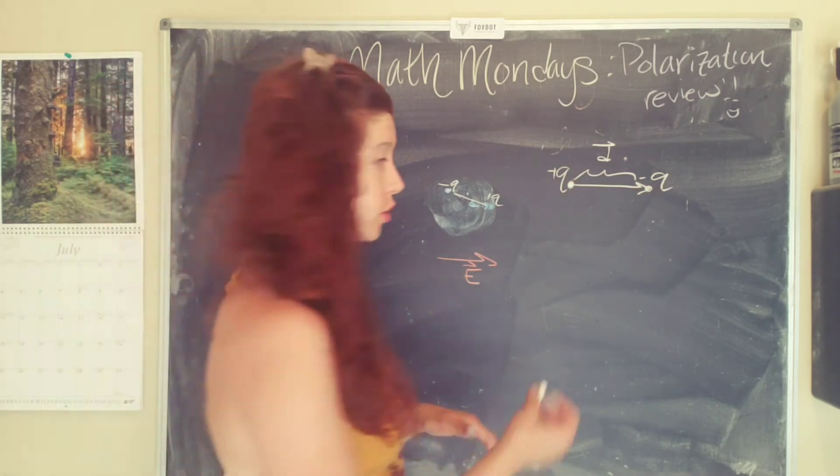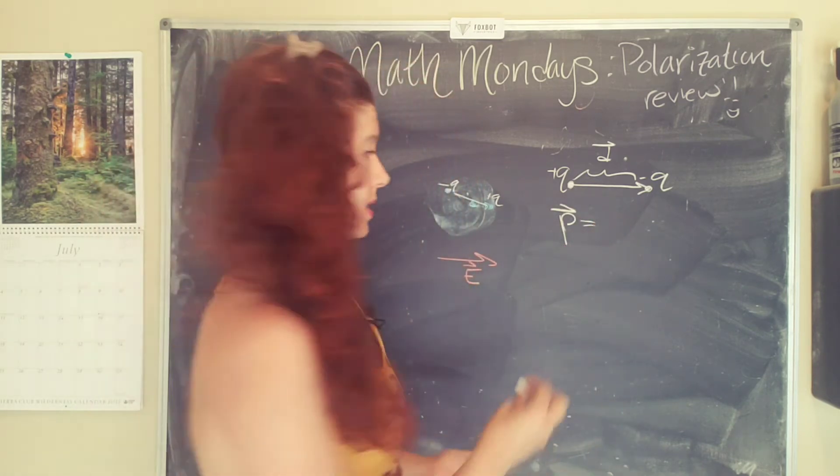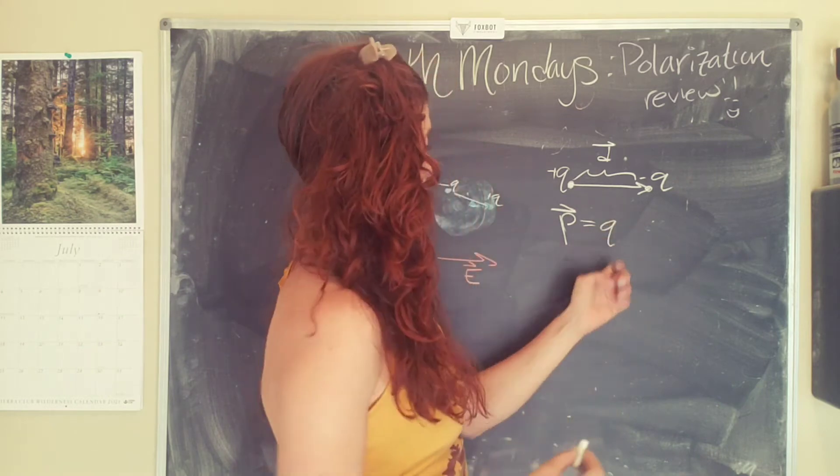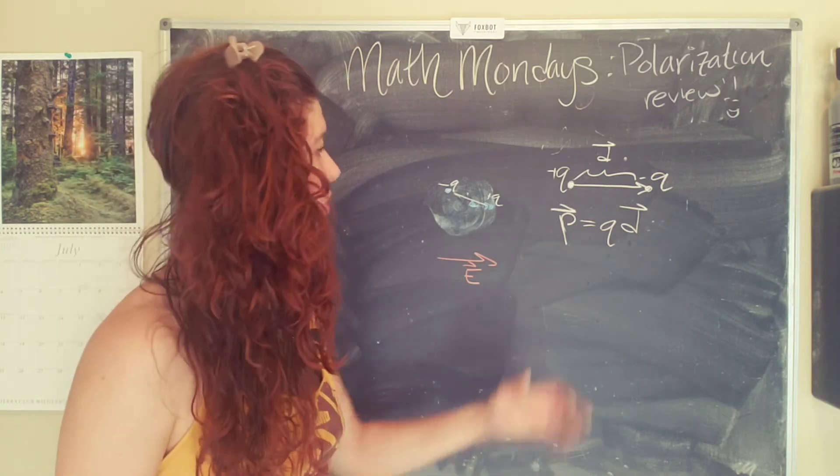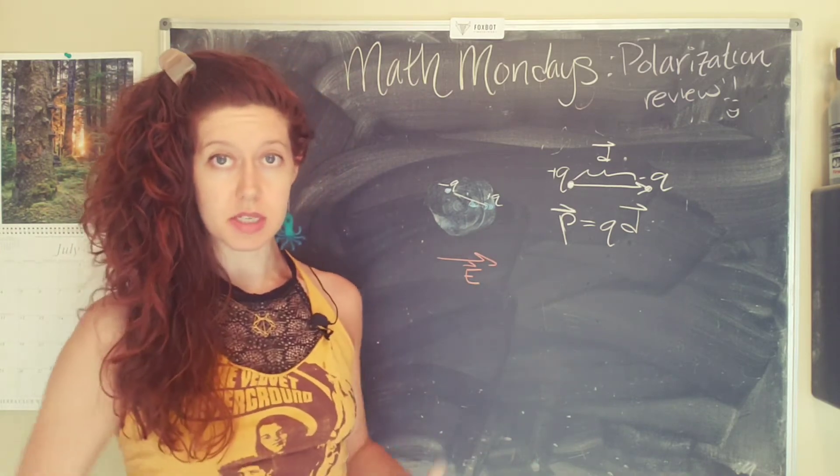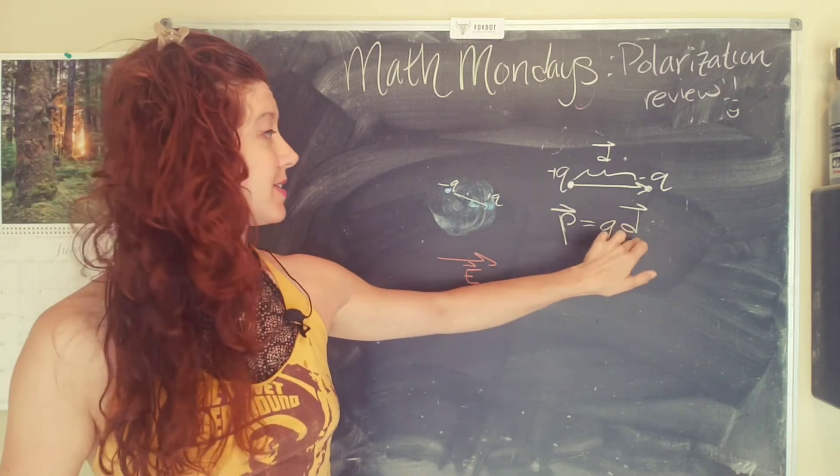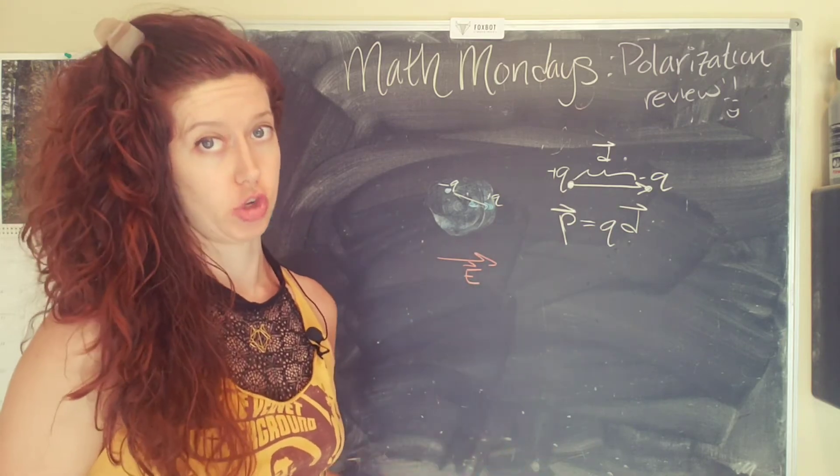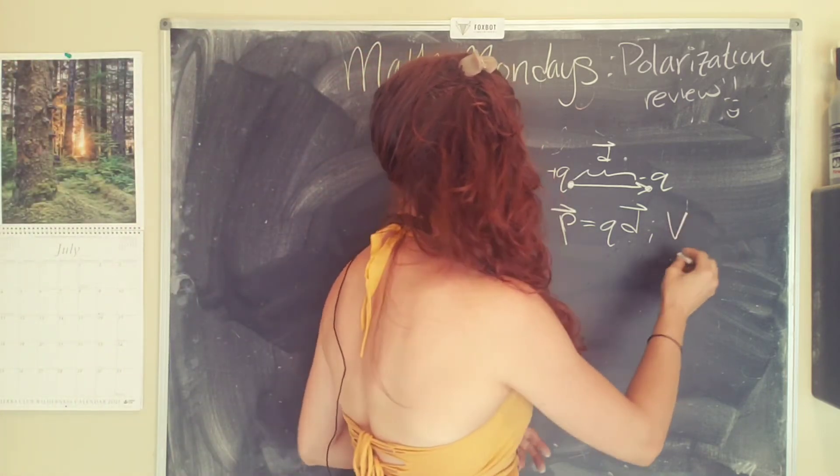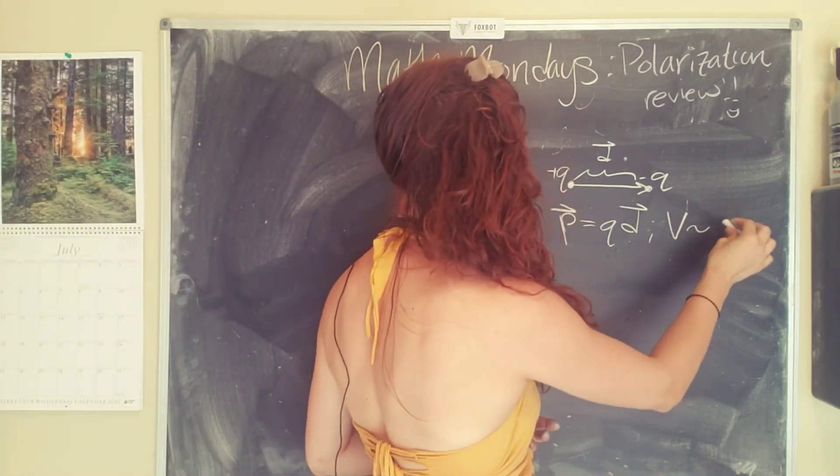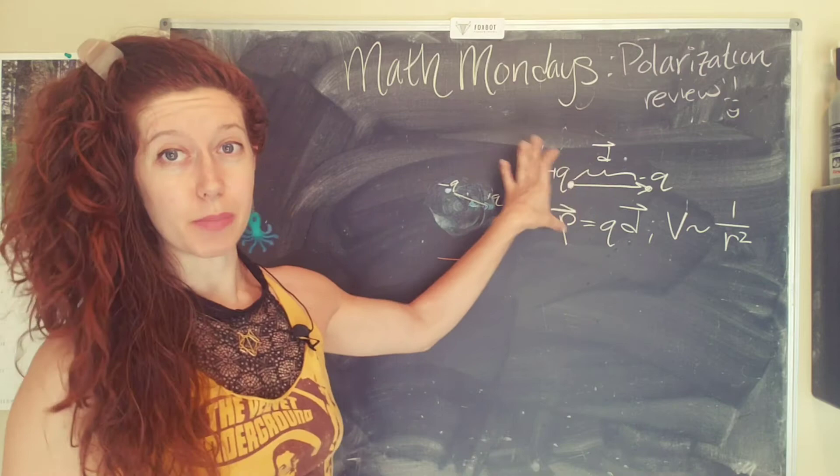So in other words, the dipole moment, lowercase p, is defined as the magnitude of the charge times this separation or this distance vector. So in other words, the dipole moment gives us some information about the magnitude and the distance between the two charges. For a pair of charges, the potential scales as one over r squared. Okay, so this is what a dipole moment is.